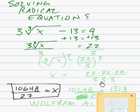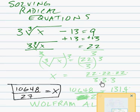Now we need to get rid of the 3. When we divide by 3, divide by 3, we get the cube root of x equals 22 over 3.